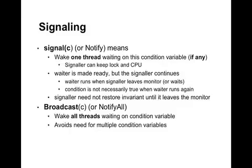While calling signal, the signaling thread keeps the monitor lock and keeps running on the CPU — it does not immediately switch to the waiting thread. Instead, the waiting thread is made ready to run, meaning it is taken off the queue, but the waiter now has to wait to get the monitor lock. So the waiter will run when the signaler leaves the monitor. This means that when the waiter actually starts running, the condition it was waiting for may not still be true. Also note that wait releases the monitor lock, so the monitor invariant must be true before calling wait, whereas signal does not release the monitor lock, so the invariant does not need to be true when calling signal. The final operation is broadcast, also called notify all, which will wake up all the threads waiting on a condition variable. This can be useful if you want to tell all threads that you're done with something they're waiting on, or if you have threads waiting on different things, you can wake them all at once and let them figure out whether they're done.